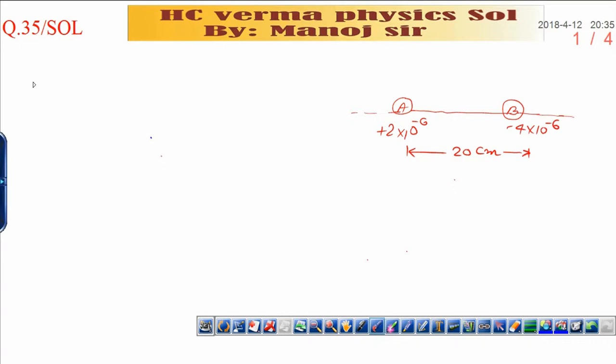In this question it is given there are two charges placed at two points A and B. At A charge is plus 2×10⁻⁶ coulomb and at B charge is minus 4×10⁻⁶ coulomb and they are separated by 20 centimeters. Now you have to locate the point on the line AB where the electric field is zero.